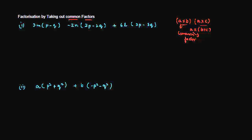In many situations when you come across mathematical problems, the way you can solve them is if you can find a common factor which is multiplying various other things and forming an algebraic expression. In this case we have 3m·(p−q) minus 2n·(2p−2q) plus 6l·(3p−3q). At first look you might wonder that there is actually nothing common between these three parts.